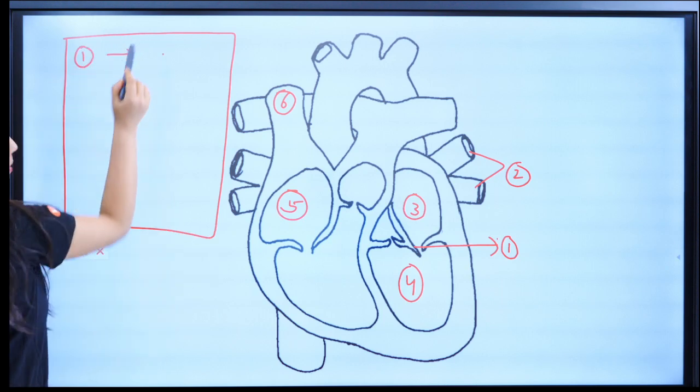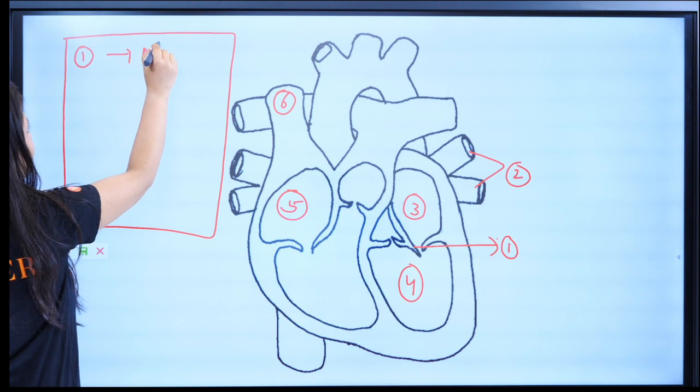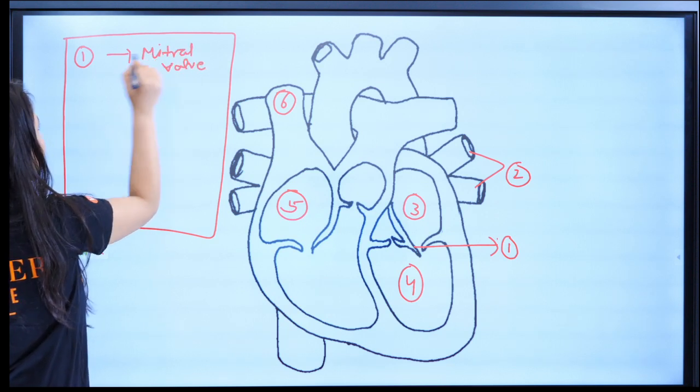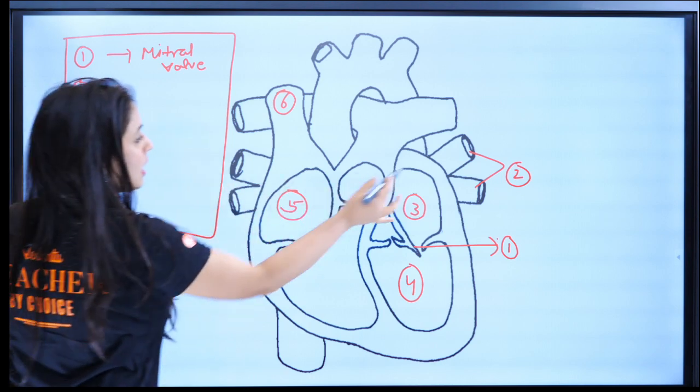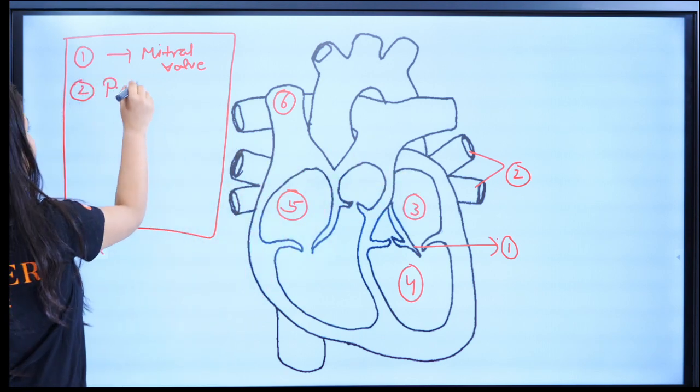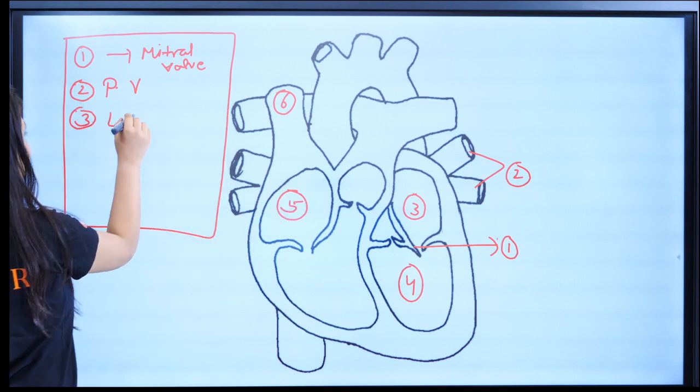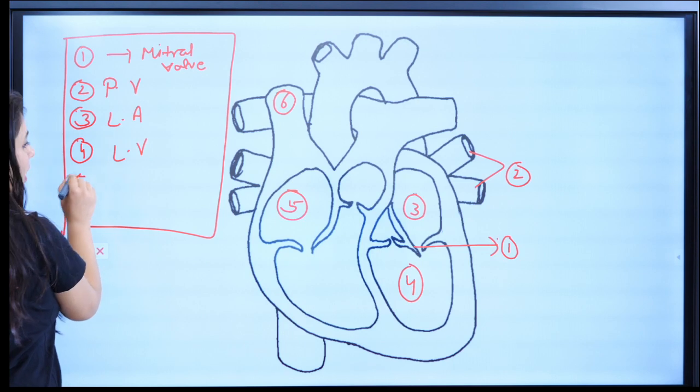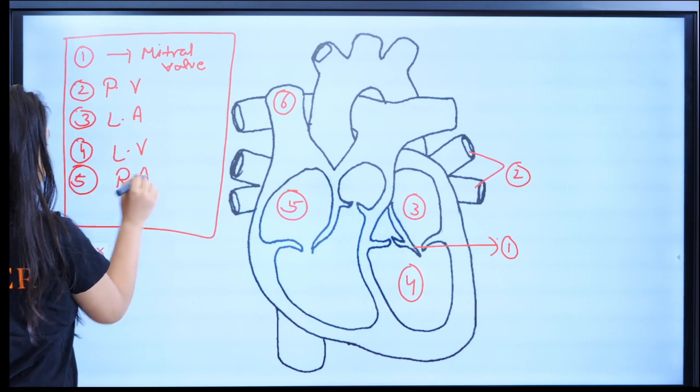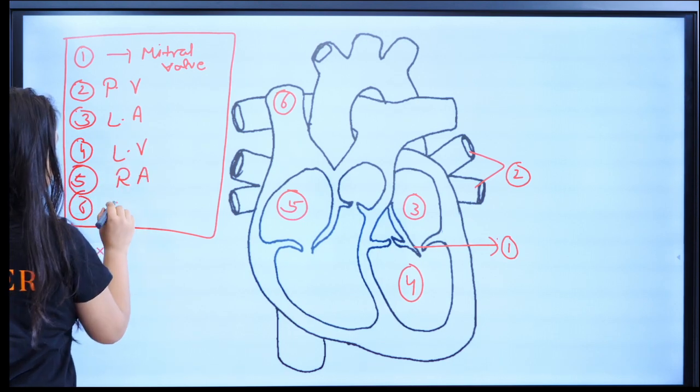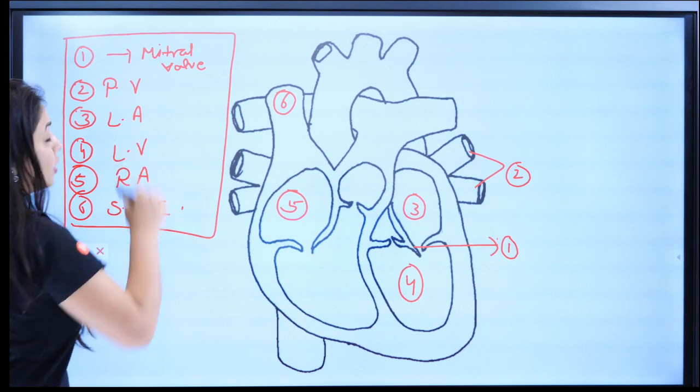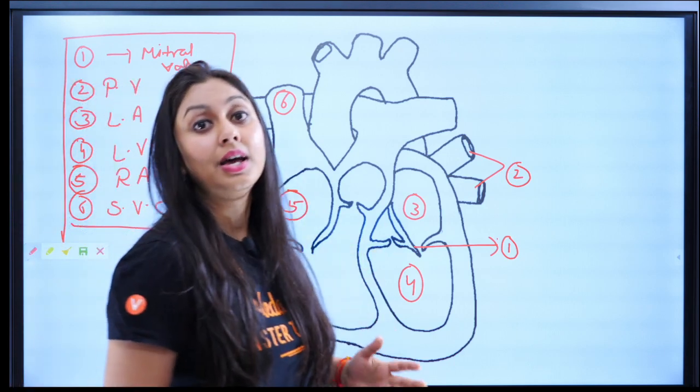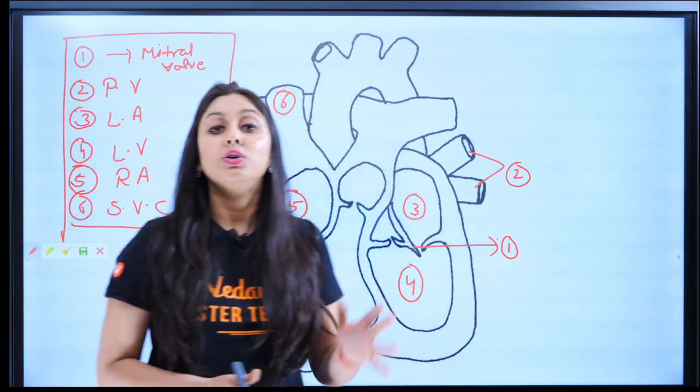So what you can do is now make a chart here, you know, at this side and just write number one is what. Number one, suppose here it is written, this is the mitral valve, okay. So you write that mitral valve, sorry about the writing. Number two is you write that here pulmonary veins. Number three is like suppose this is left auricle. Now number four is left ventricle, number five is right auricle, number six is this is superior vena cava. You're getting my point, but not the short forms, okay? I'm just writing to make you understand this.